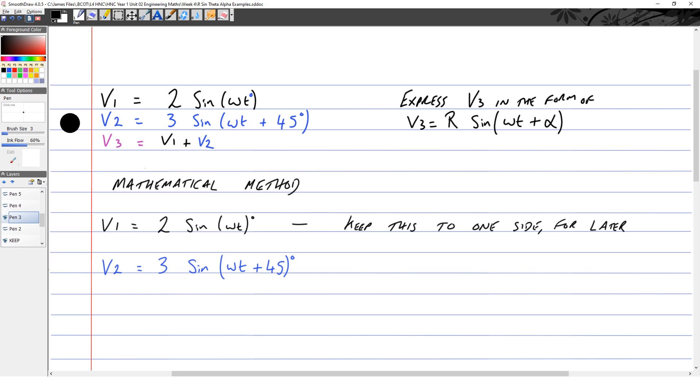We're going to use the compound angle formula on V2. So let A be ωt, and let B be 45 degrees. The compound angle formula, sin(A + B), is sin(A)cos(B) + cos(A)sin(B). A is ωt, and B is 45 degrees.